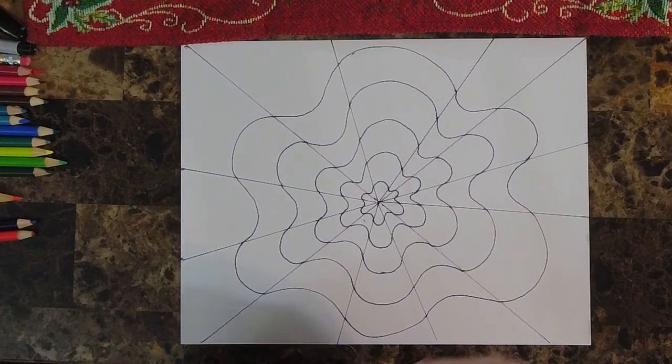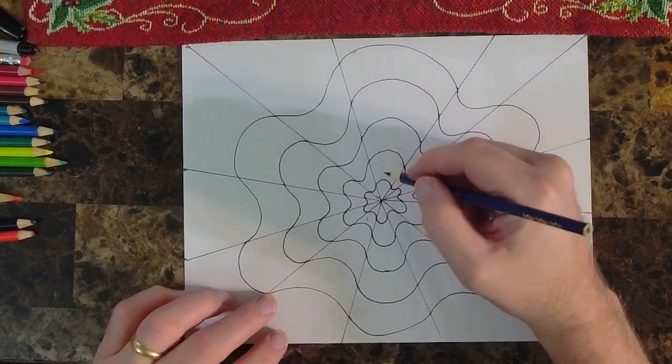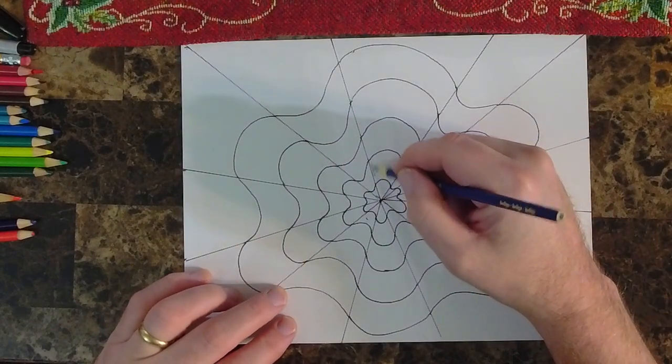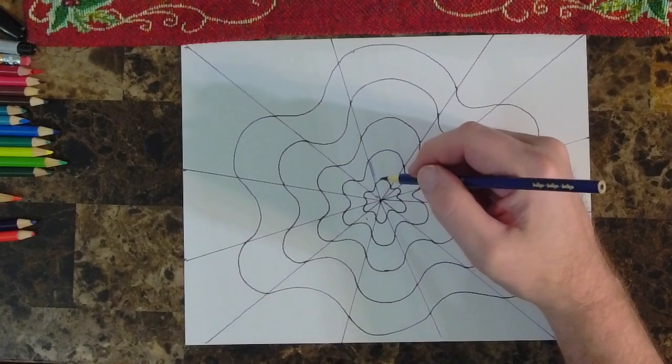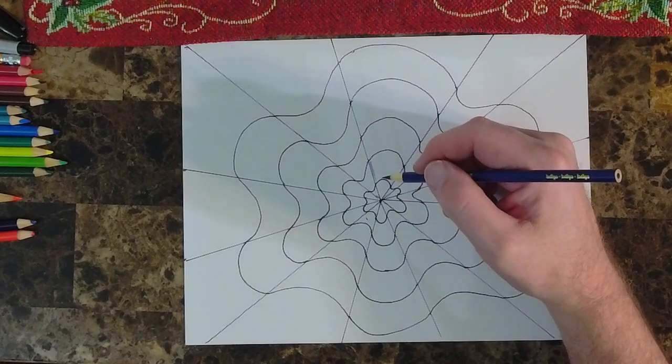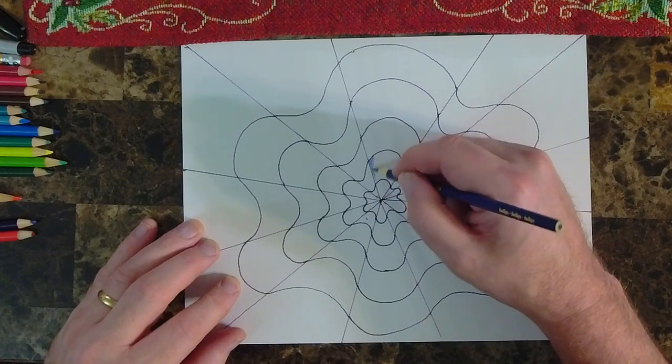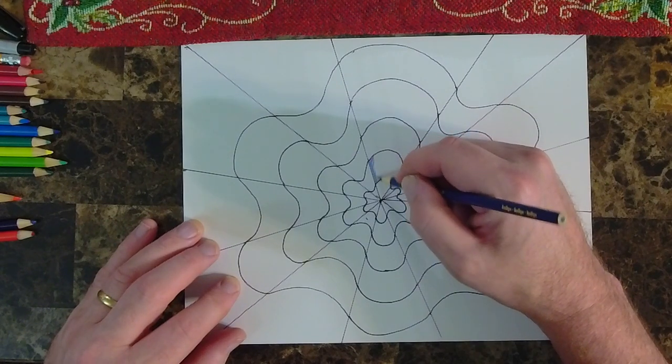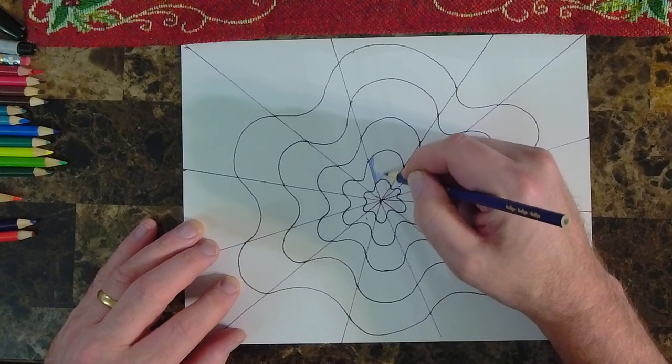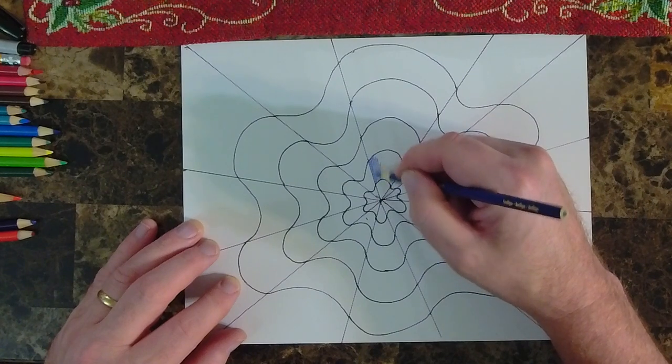And already we've created something very cool. It already looks like kind of an optical illusion. But what we're going to do is we're just going to pick any color that you want in your colored pencils or your crayons, whichever way. And then we're going to color every other. We're going to use one. Focus on one of those triangle sections first, and we're going to do every other little segment.